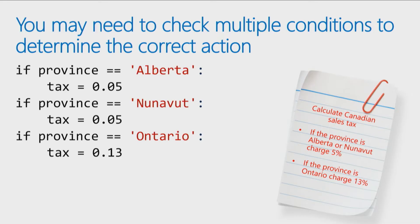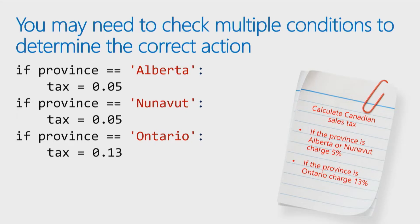I could write multiple if statements: if the province is Alberta, set the tax to 5%; if the province is Nunavut, set the tax to 5%; if the province is Ontario, set the tax to 13%. This will work, but there's a more elegant way to do it using something called ELIF. Because in this case, only one of these conditions will ever happen — the province is never going to be Alberta and Ontario at the same time. That's when you want to use ELIF.